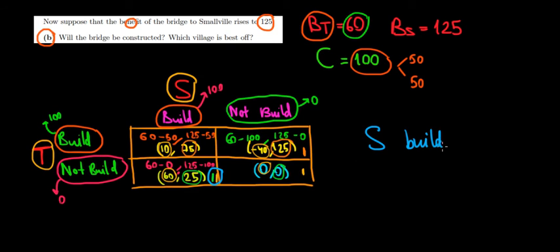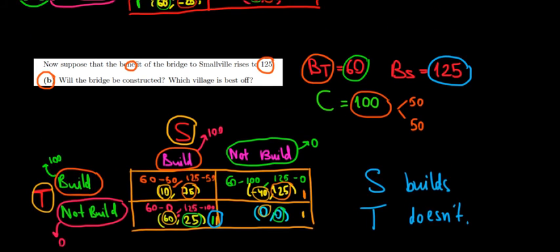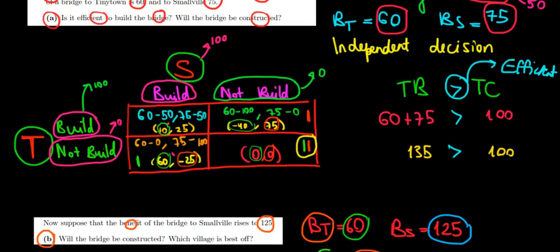So S builds, T doesn't. What is the idea here? This is an idea of free riding. The intuition is this: for Smallville, the fact that he has such a high benefit of 125 for building the bridge, he's willing to incur the entire cost because it's worth enough for him to do it. Whereas in the previous question, we saw that the Nash equilibrium was that none of them is going to build the bridge. Why? Because when they compare their benefit relative to the cost of doing it by themselves, it is not worth it.